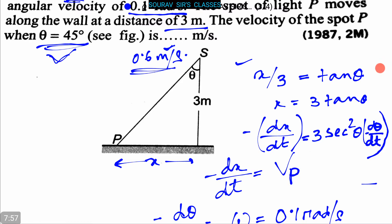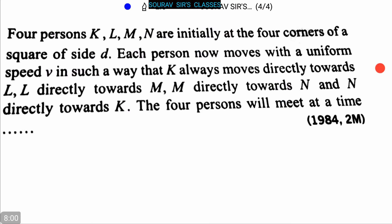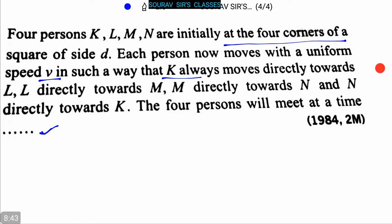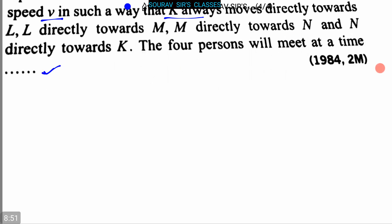Now here is our next question, which is a very interesting one. Four persons K, L, M, N are initially at the four corners of a square of side d. Each person moves with a uniform speed v such that K always moves directly towards L, L towards M, M towards N, and N towards K. We have to find the time at which the four persons will meet. By symmetry, all will meet at the center of the square.